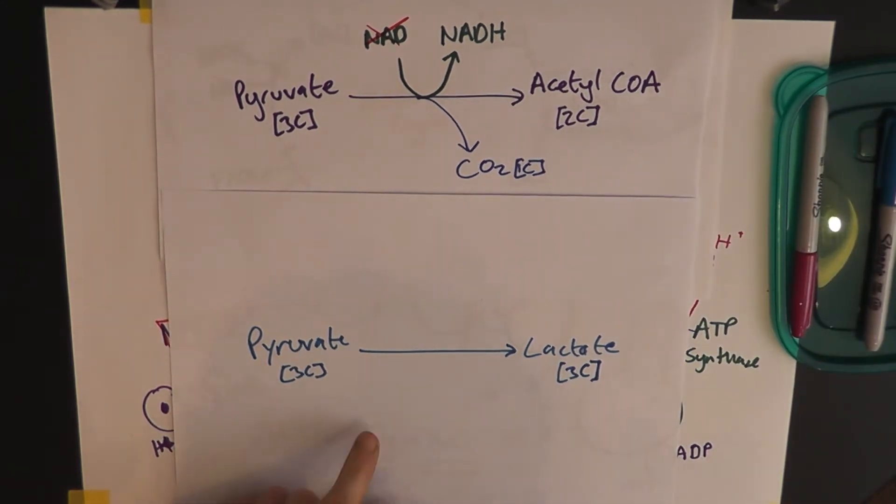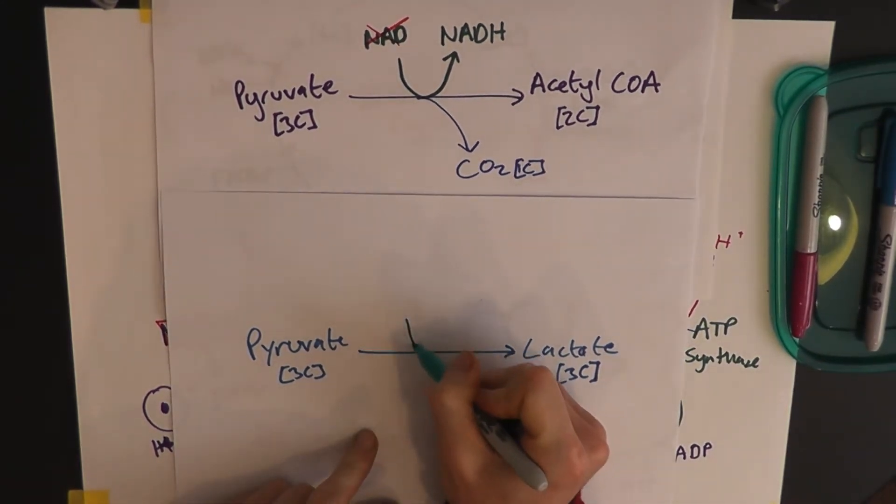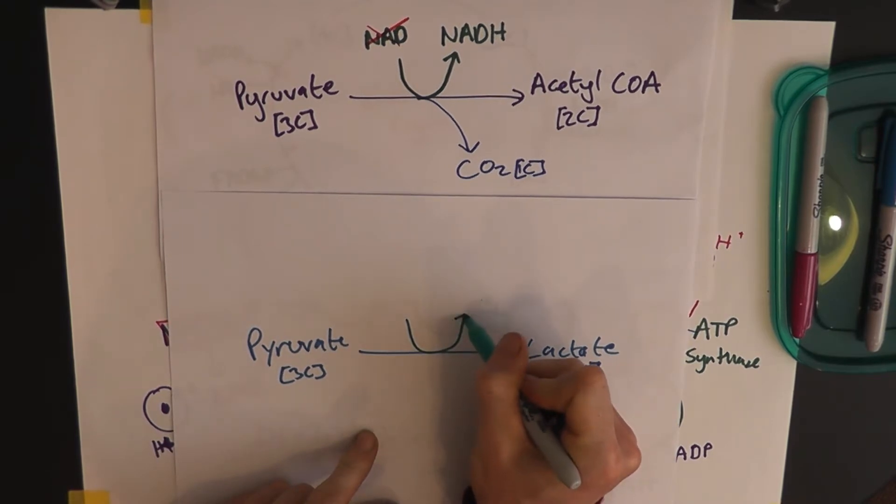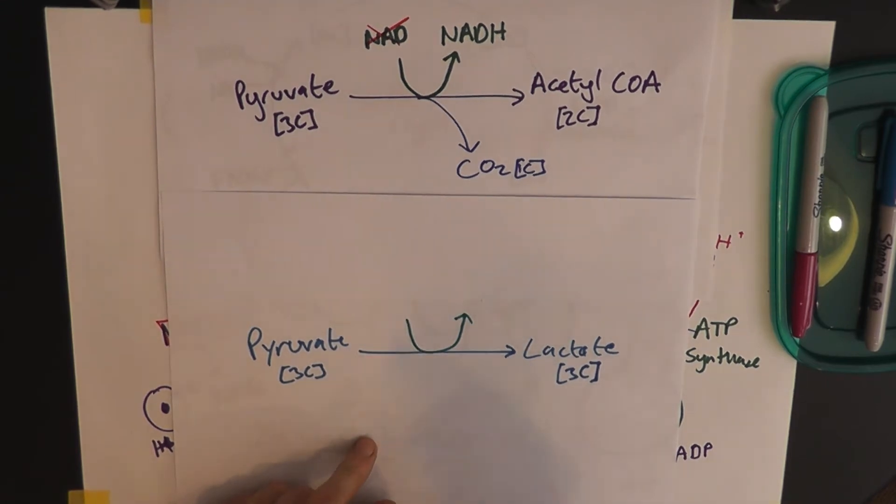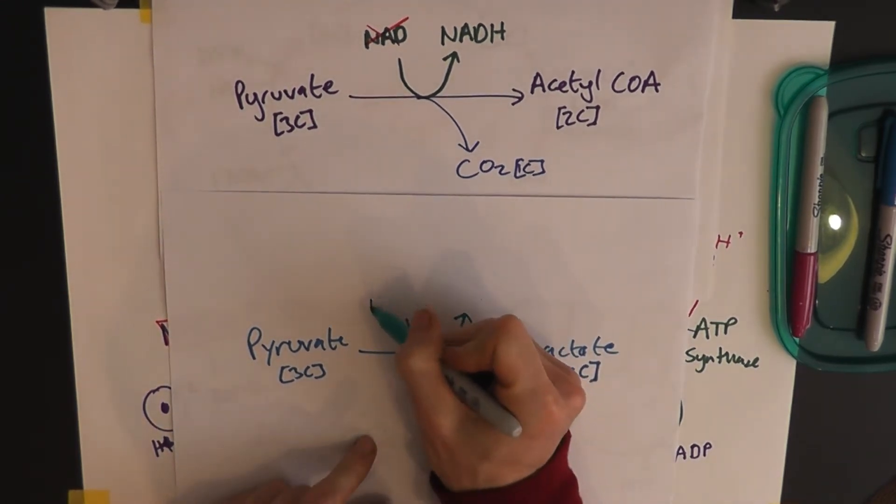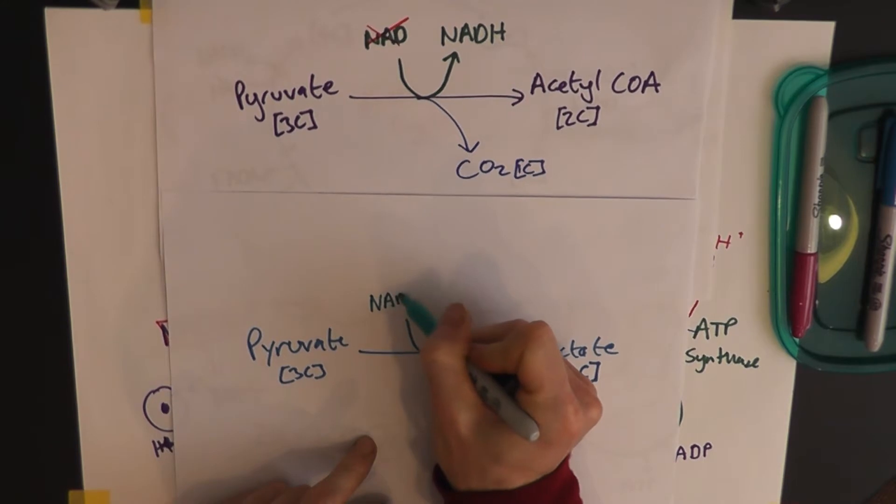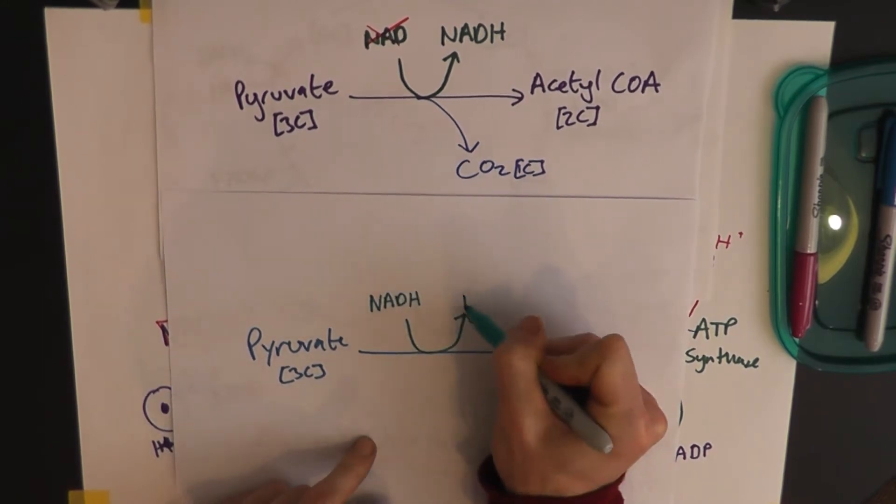Now, what happens, therefore, in this reaction, is something quite special. Because, instead of empty NAD going to NADH, it's actually the opposite way around. This uses a little bit of NADH and converts it into NAD.